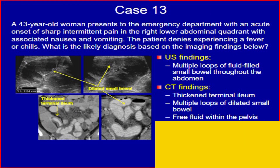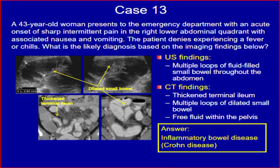Case 13. A 43-year-old woman presents to the emergency department with an acute onset of sharp intermittent pain in the right lower abdominal quadrant with associated nausea and vomiting. The patient denies experiencing fever or chills. What is the likely diagnosis based on the imaging findings? Ultrasound findings show multiple loops of fluid-filled small bowel throughout the abdomen. CT findings show the terminal ileum, multiple loops of dilated small bowel, and free fluid within the pelvis. The answer is inflammatory bowel disease, Crohn's disease.